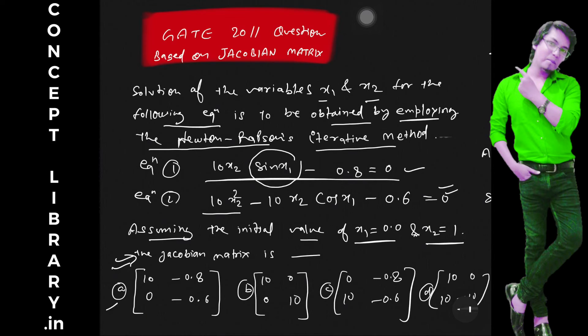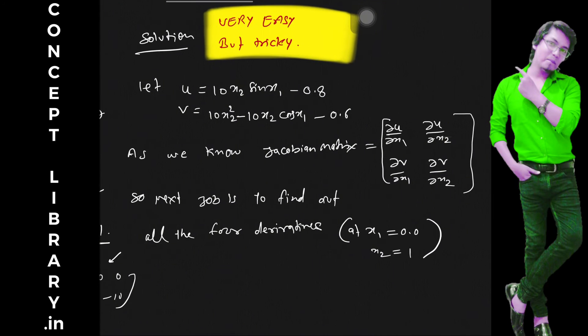Option A is 10 minus 8, 0 minus 6. Option B is 10, 0, 0, 10. Option C is 0 minus 0.8 and 10 minus 0.6. And option D is 10, 0, 10 minus 10.